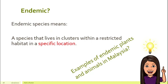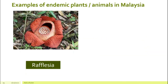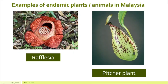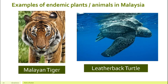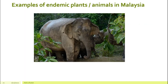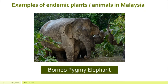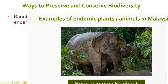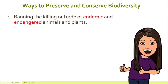Can you name some examples of endemic plants and animals in Malaysia? Let's look at a few examples: Rafflesia flower, the pitcher plant, Malayan tiger, leatherback turtle, and the Borneo pygmy elephant. These are all examples of endemic plants and animals in Malaysia. So the first suggestion — the first way to preserve and conserve biodiversity — will be the banning of killing or trading of those endemic or endangered animals and plants.